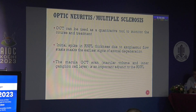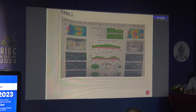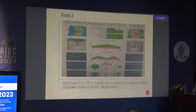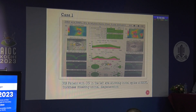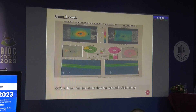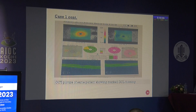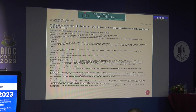Macular OCT scan is another important adjunct in such situations. In case one — an MS patient with optic neuritis in the left eye — we see an initial spike of RNFL thickness masking axonal degeneration. The OCT picture of the same patient shows marked GCL thinning, meaning axonal degeneration has already occurred, which the GCL has revealed.